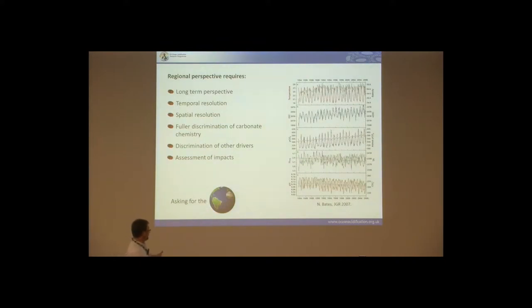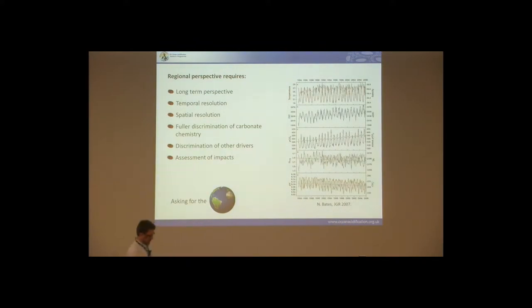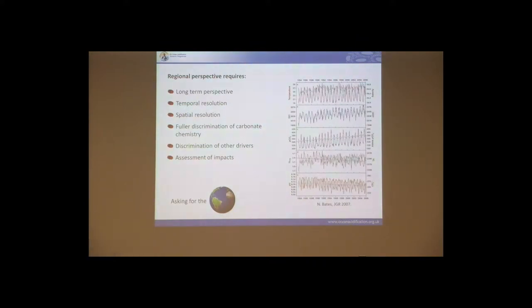If we want to move towards an assessment of impacts, what do we actually choose to do that? I put the BATS dataset up as a nice example of something that gives you great temporal resolution. As a modeler, we always ask for the world — and I apologize for that, but then I don't apologize, because I'm just being honest about what we need.